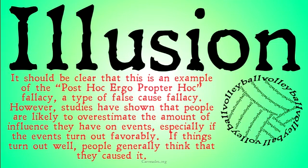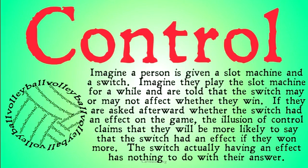Studies have shown that people are likely to overestimate the amount of influence they have on events, especially if those events turn out favorably. If things turn out well, people generally think that they caused it, whereas if things turn out poorly, people underestimate the amount of influence they had. Imagine a person given a slot machine and a switch. They play the slot machine for a while and are told that the switch may or may not affect whether they win. If asked afterward whether the switch had an effect, the illusion of control claims they will be more likely to say the switch had an effect if they won more. The switch actually having an effect does nothing to influence their answer; rather, the amount they win makes them more likely to say the switch had an effect, whereas if they win less, they're less likely to say so.